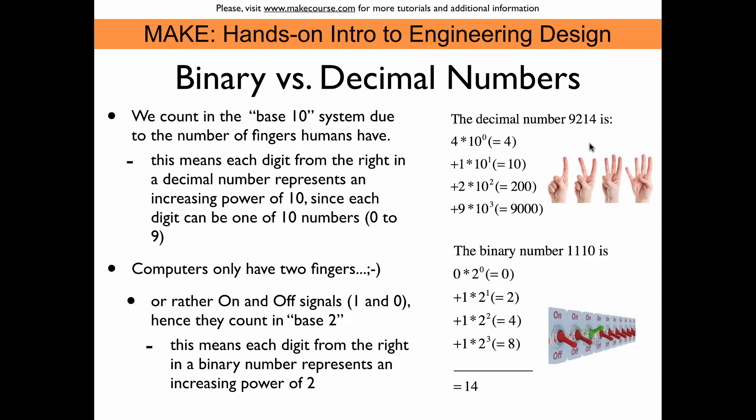And so if we have a number like 9214, of course you can interpret this as 9000 plus 200 plus 10 plus 4. And so in a systematic way, if we look at the base 10 aspect, we can say it's 4 times 10 to the power of 0. And that is of course 4 times 1. And so we get 4, so this is our first digit here.